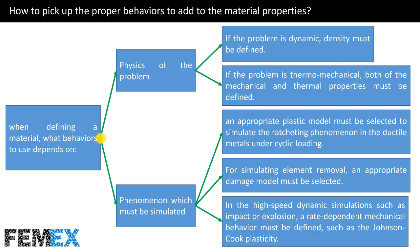Now I want to talk about how to pick up the proper behaviors to add to the material properties. When defining a material, what behaviors to use depends on the physics of the problem and the phenomenon which must be simulated. For example, if the problem is dynamic, density must be defined; or if the problem is thermo-mechanical, both mechanical and thermal properties must be defined. To simulate ratcheting in ductile metals under cyclic loading, an appropriate plastic model must be selected. For simulating element removal, an appropriate damage model must be selected. In high-speed dynamic simulations such as impact or explosion, a rate-dependent mechanical behavior must be defined, such as the Johnson-Cook plastic model.